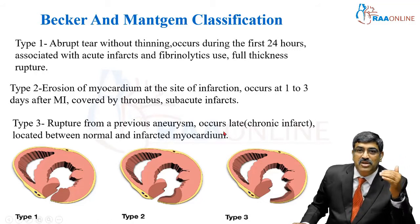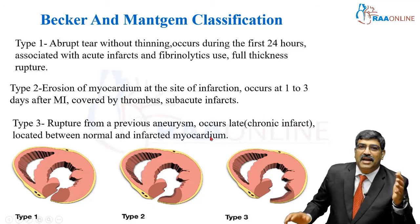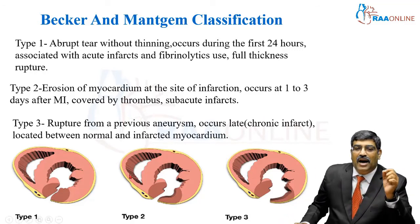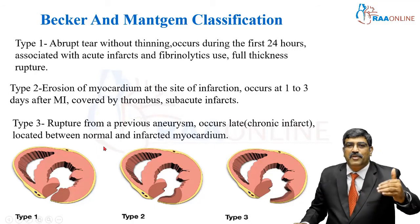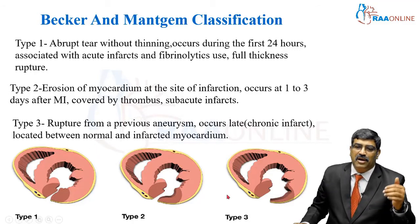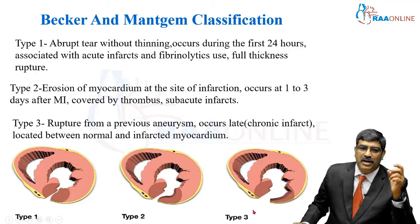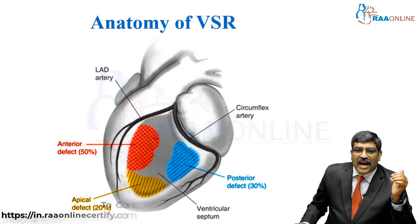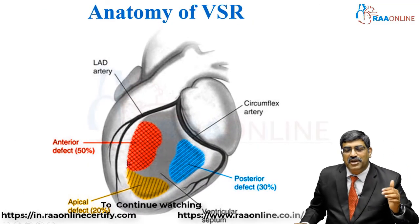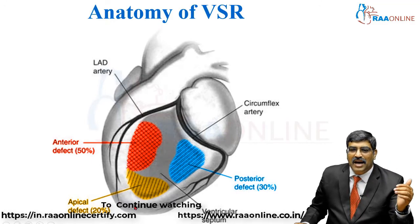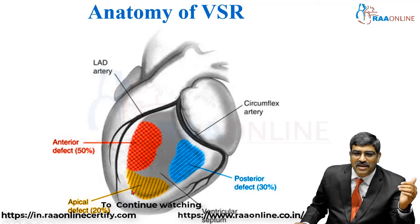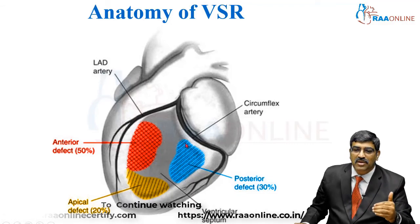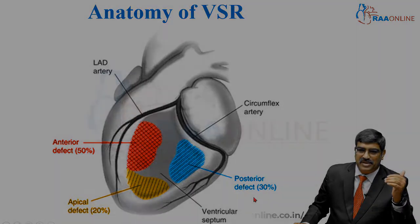Type 3 occurs late, usually in a chronic infarct, which can happen between 4 to 7 days, and this aneurysm is typically located between the normal and infarcted myocardium. Regarding location: anterior VSR accounts for around 50% of patients, apical around 20%, and posterior defect around 30% of patients.